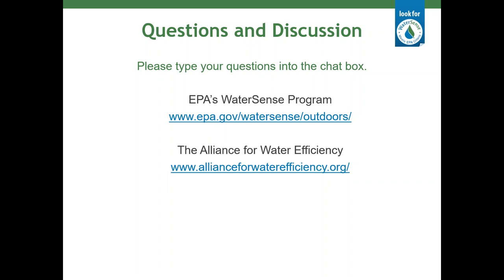The first couple of questions are for Moulton-Niguel. Are you also using the flow sensor component of Rachio controllers? We haven't done any programs with them — we've been looking at them, and know some other utilities have been doing research on them. Our concern today has been more around putting things into the plumbing on the customer side. But we think they're great and encourage customers to look at them — they do provide a wealth of information. We don't have any water efficiency programs for them yet.